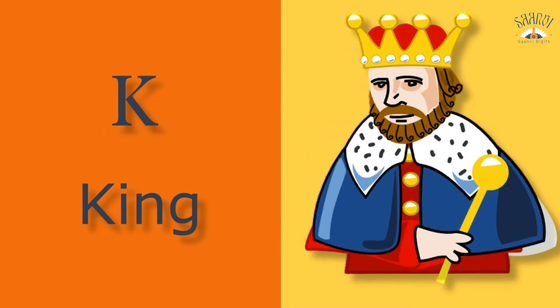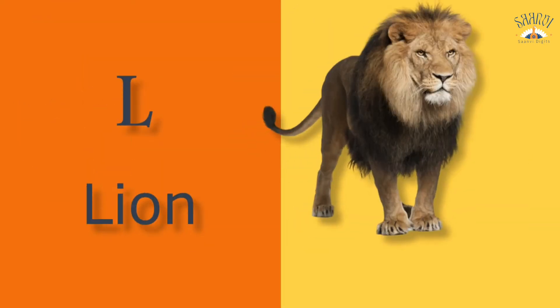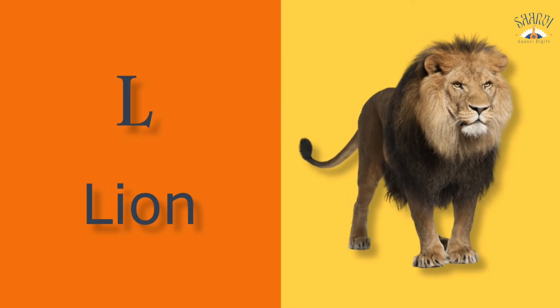K for king. King means raja. L for lion. Lion means sail.